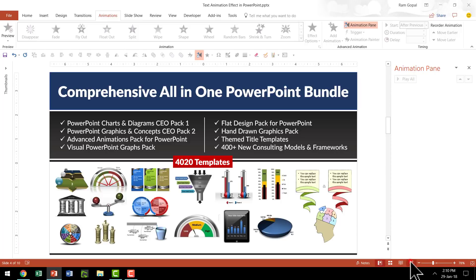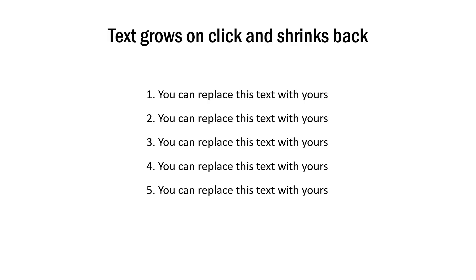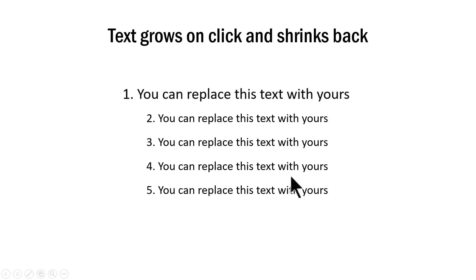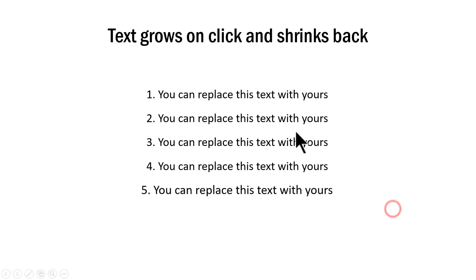What you saw was just one example of how you can combine text with animation. I want to show you some interesting alternatives taken from our comprehensive all-in-one PowerPoint bundle to showcase the power of this combination. This bundle is a collection of more than 4,020 premium PowerPoint templates that allow you to make over any text-based slide into a clear and creative visual slide in minutes. I will leave a link in the description. The first example is where text grows on click and shrinks back. It is a regular list at first, but then on a click you bring viewers' attention to each point one by one.